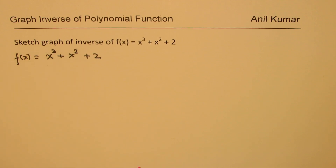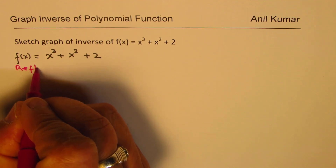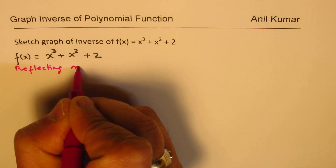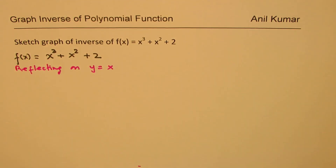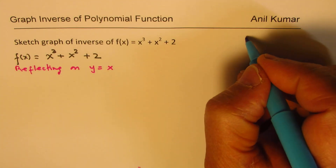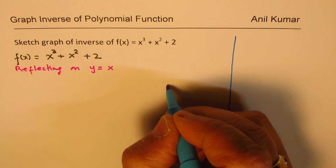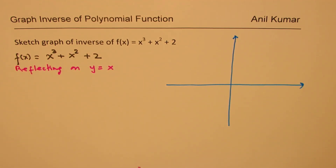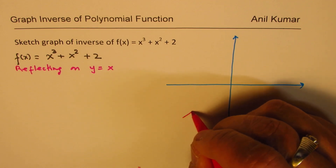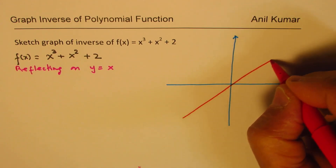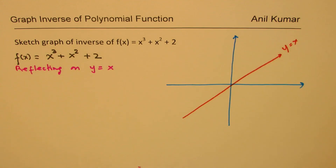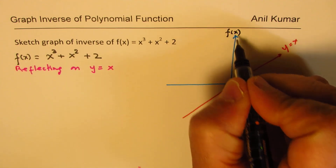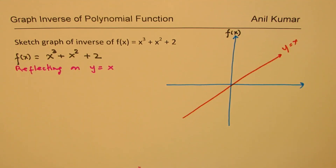However, we can sketch it. We'll do the sketching by reflecting on y = x — that's what we are going to do. So basically we'll sketch it on a coordinate plane and reflect the function on the line y = x. That's the whole idea. In the first phase, let me sketch the function itself, f(x).